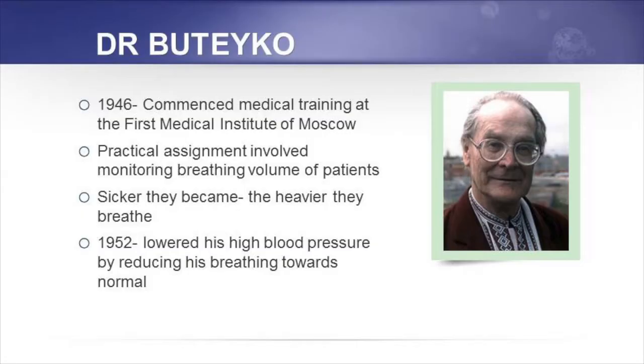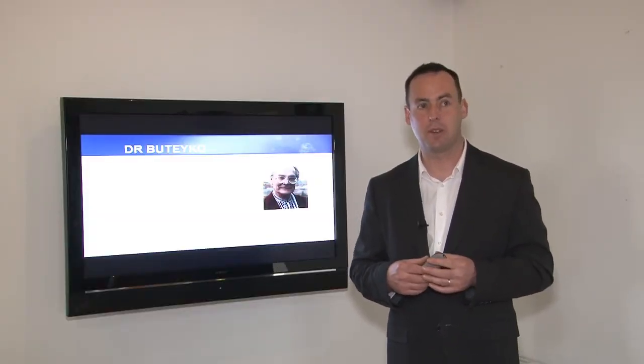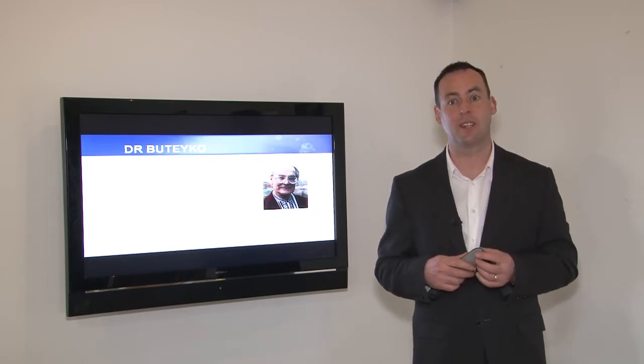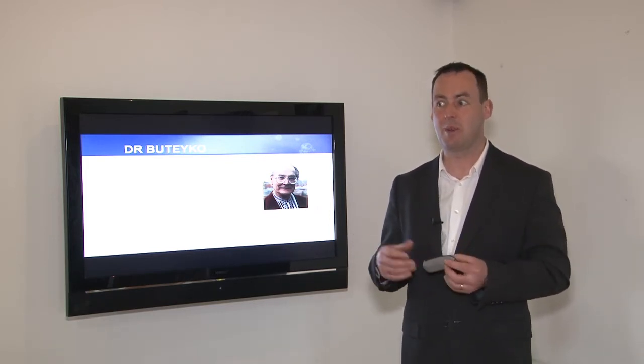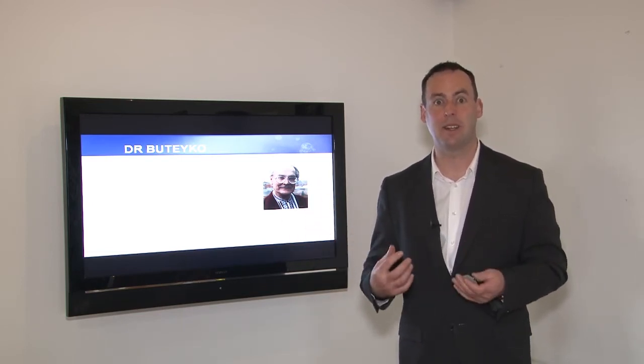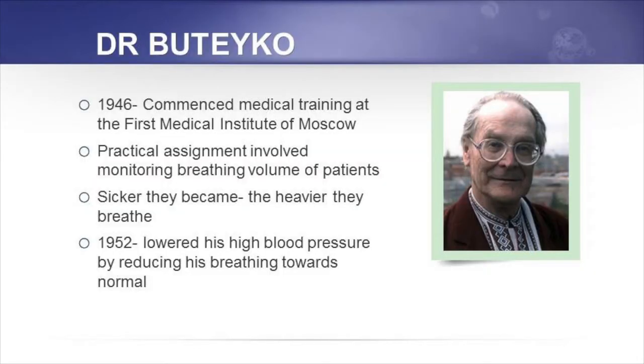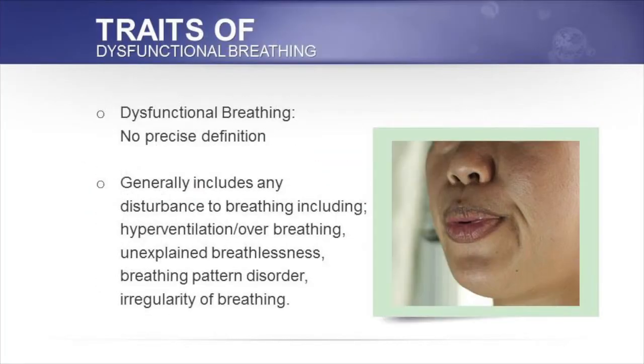Dr. Buteyko in 1946 commenced his medical training at the First Medical Institute of Moscow. One of his practical assignments was sitting at sick patients' bedsides, and he noticed that the sicker the patient became, the more intense and heavier they breathed. At the same time, he had hypertension—his blood pressure was 220 over 110, very high. He thought, if there's a link between breathing and sickness, surely by slowing down my breathing and quieting my breath it may help with my hypertension. That's what he did, and he was able to normalize his blood pressure through his breathing.